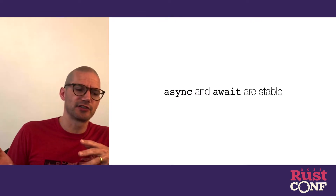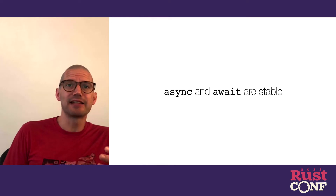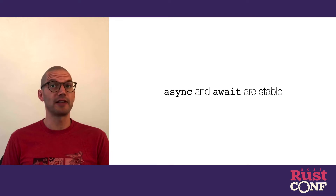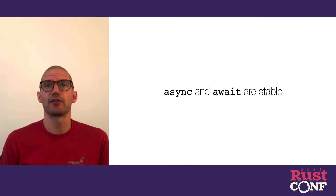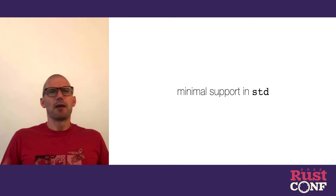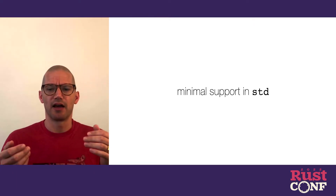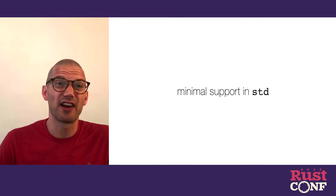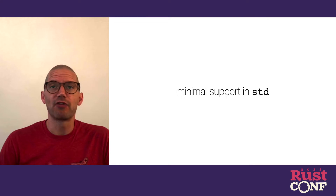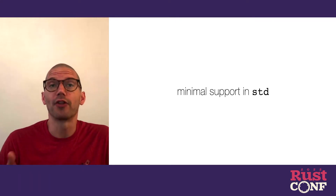Very quickly, just to fill you in on what you can do today if you're not aware: async and await are keywords and they are stable. They've been stable since 2018, and so you can do asynchronous programming in Rust today. However, there is minimal support in the standard library for it, and frankly, the support of the language is somewhat minimal too. We're really relying on the ecosystem to fill in a lot of the gaps.